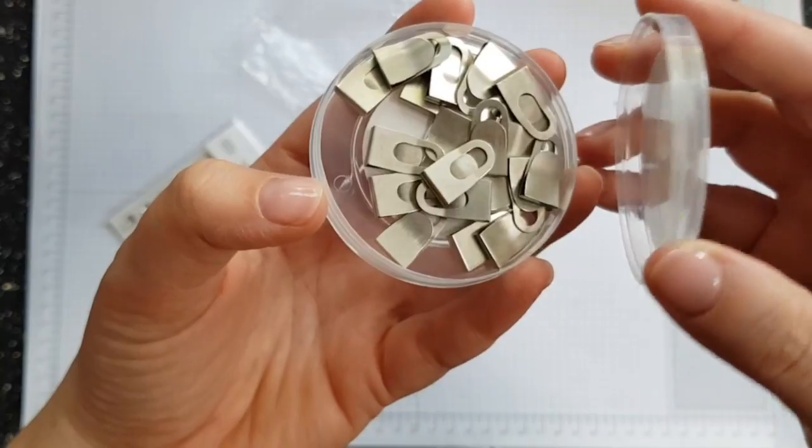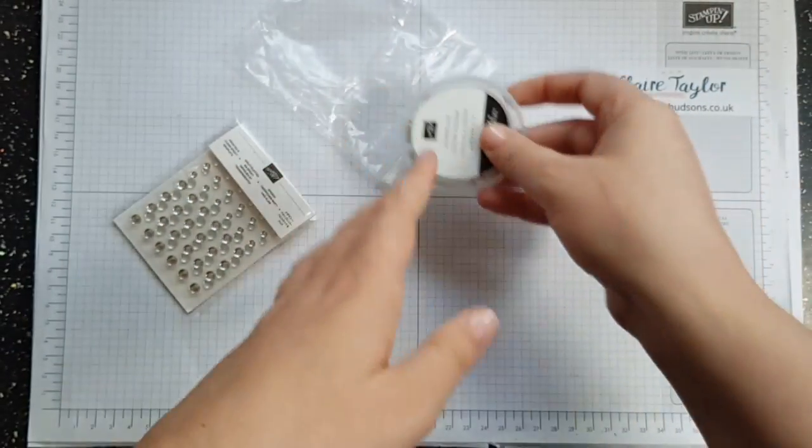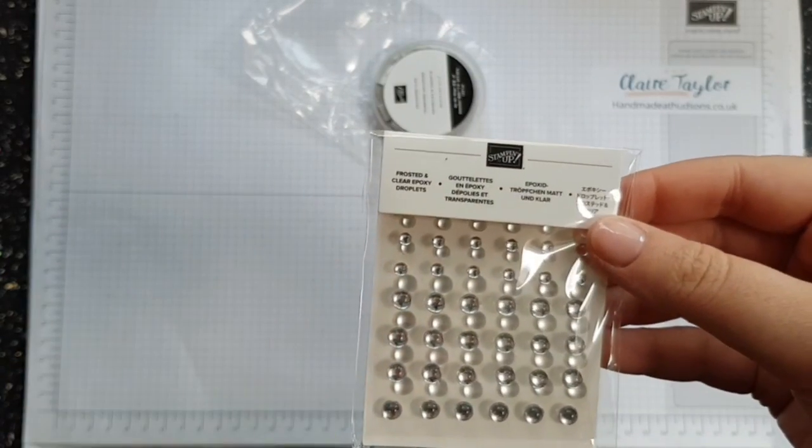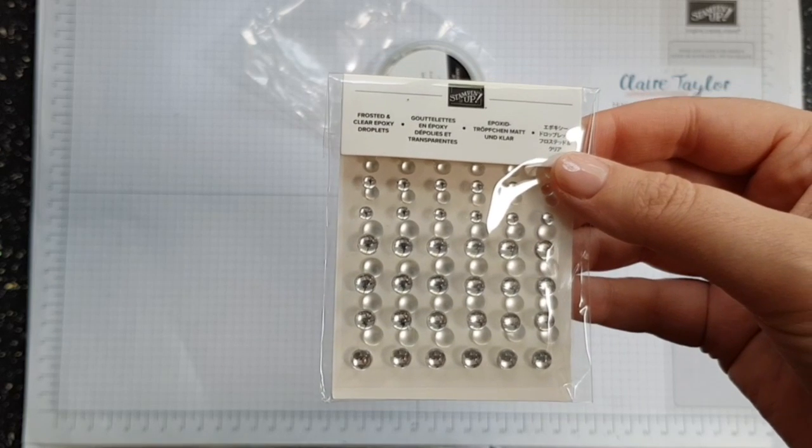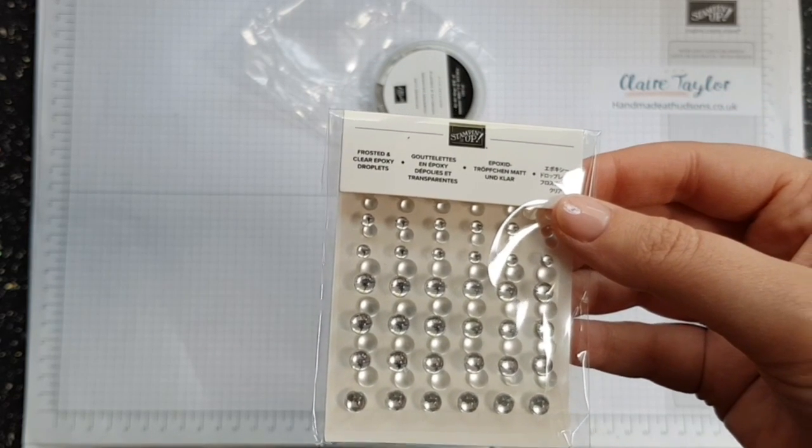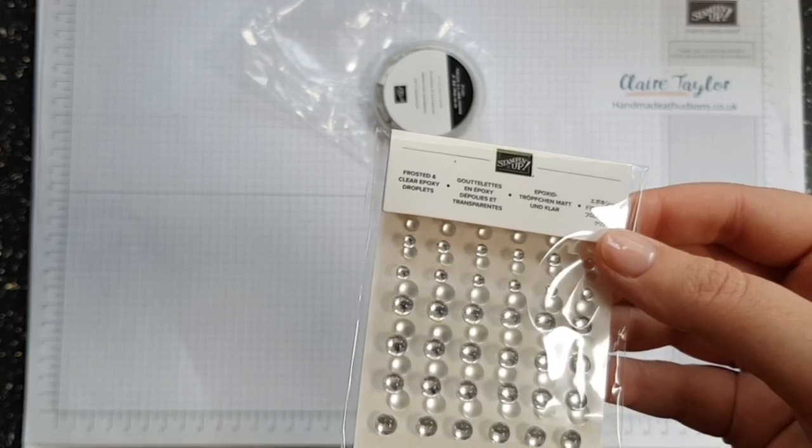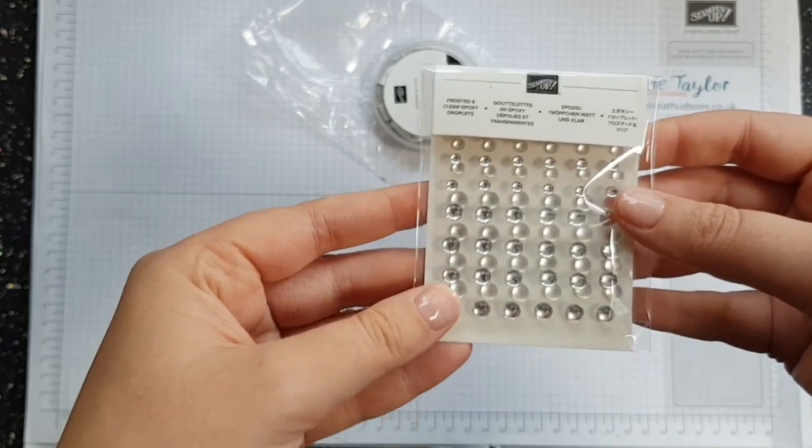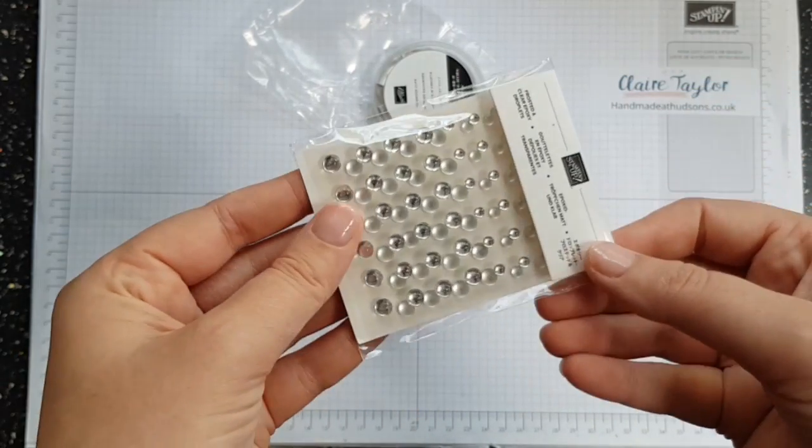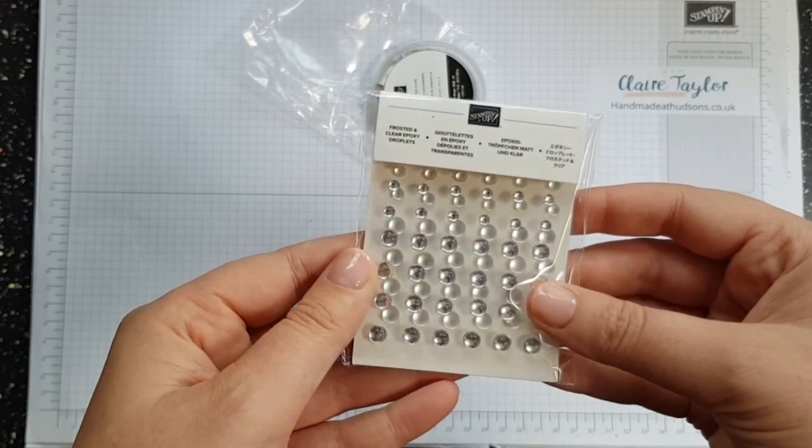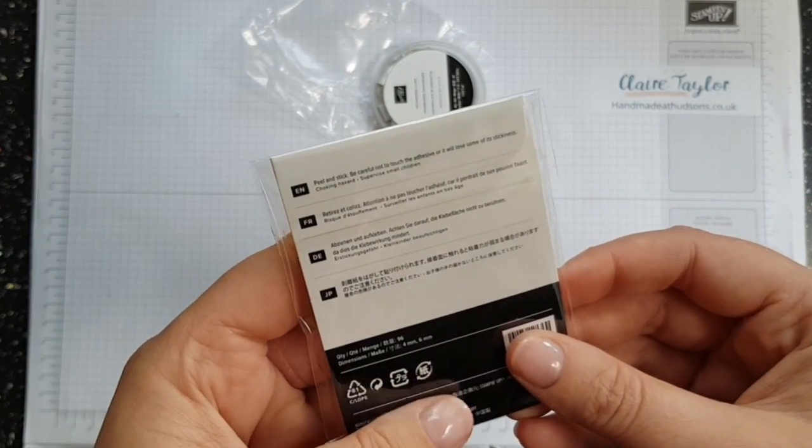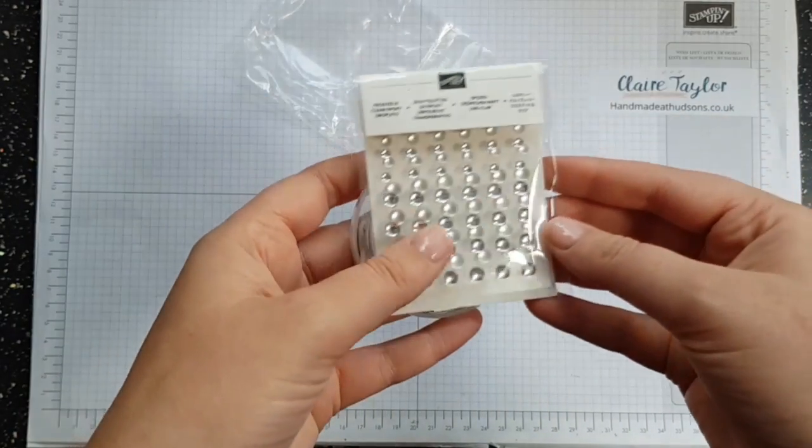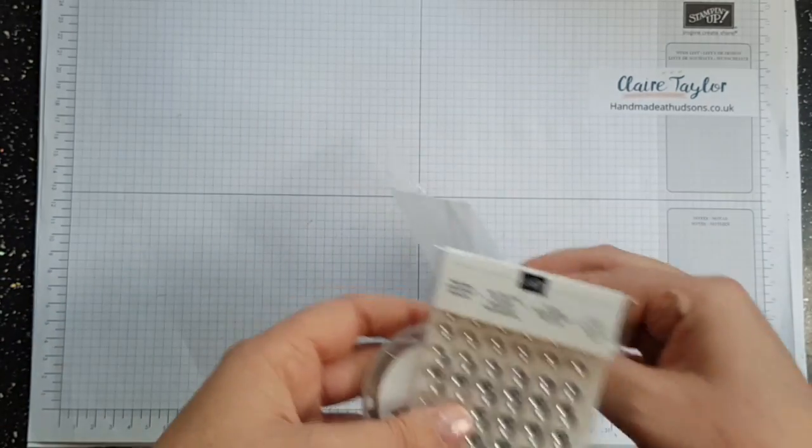And then I'm so excited about these, I've got frosted and clear epoxy droplets. These are from the frosted floral set. There was something similar in the last catalogue but smaller and I have a collection of those because they are one of my favourite embellishments. So I can't wait to get these out and play with these, these are absolutely stunning and you get 96 in a pack which will keep me happy and might get me through one example video, you never know.